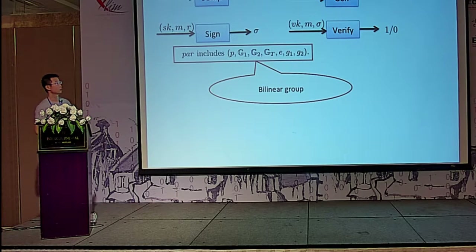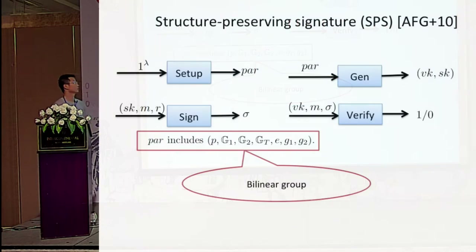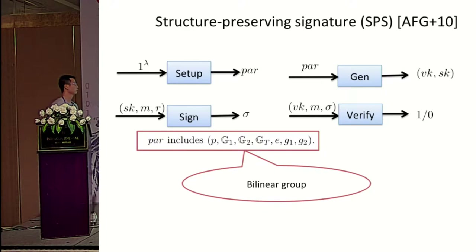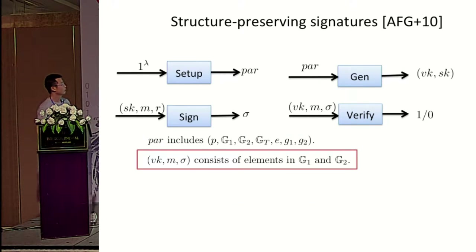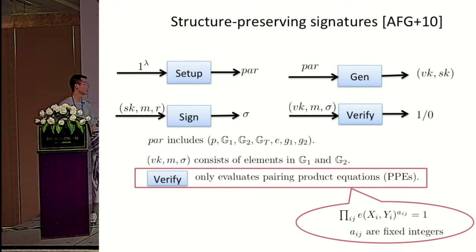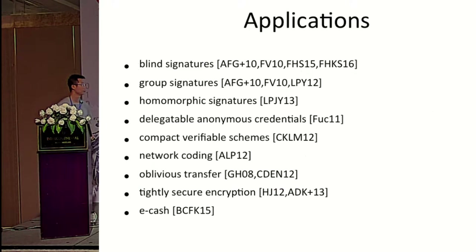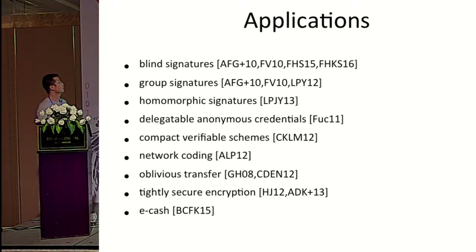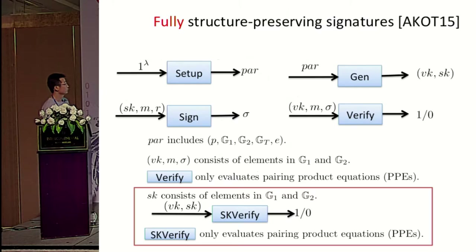Structure-Preserving Signature Schemes were first introduced by Abe and others in 2010. It's the same as the standard signature scheme, except that it's required that the public parameter includes a bilinear group, and the verification key, the message, and the signatures consist of only group elements. The verification algorithm only evaluates pairing product equations. There are many applications for Structure-Preserving Signature Schemes, such as blind signatures, group signatures, and homomorphic signatures.